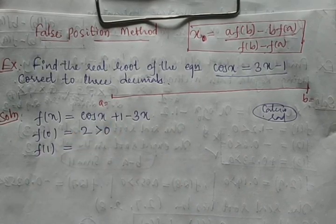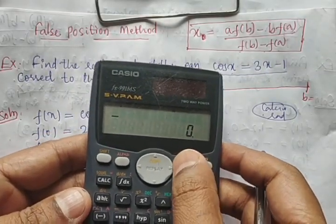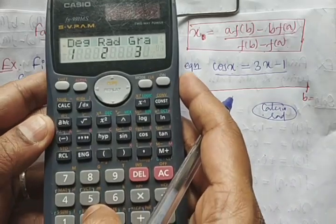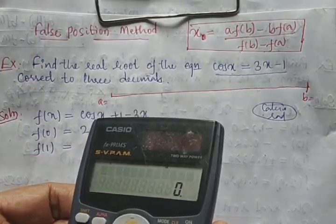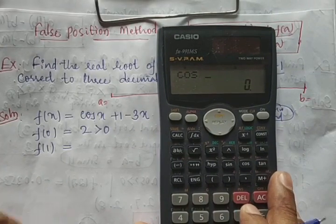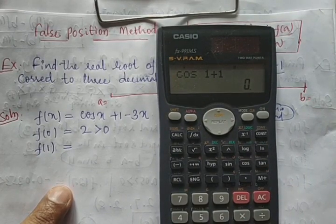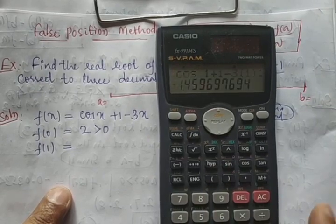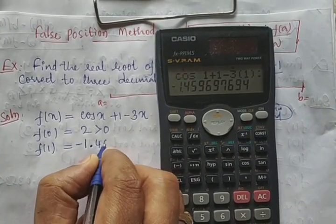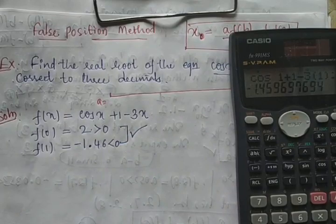Next we test x = 1 with the calculator in radian mode: cos(1) + 1 − 3(1) = −1.46, which is negative. Since we have a sign change from positive to negative, the root lies between 0 and 1.